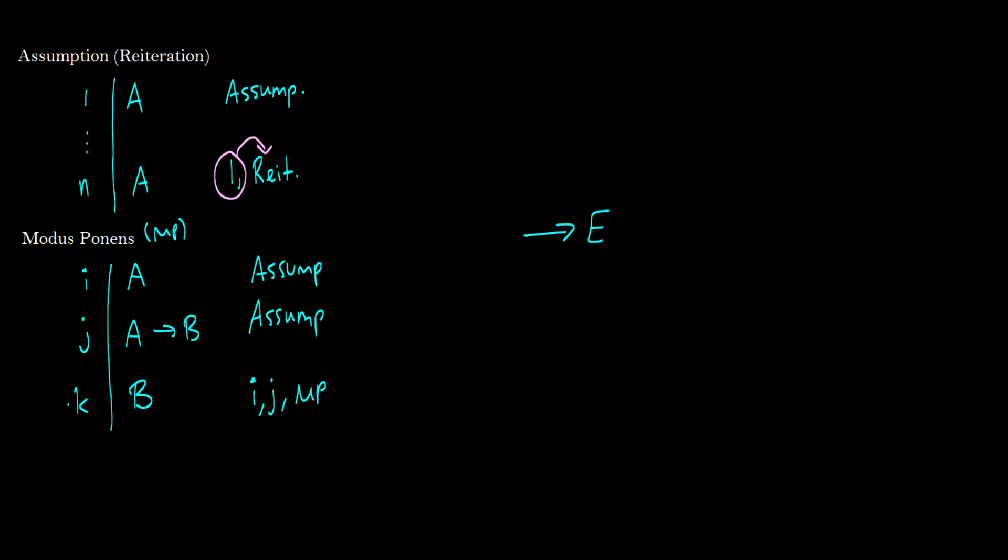This is also called conditional elimination sometimes, which you might see as that. This is a really weird term for this because it's modus ponens, and it is a commonly used term everywhere in philosophy. So I kind of can question books that use arrow elimination or they call it conditional elimination. It's kind of weird. It bothers me in ways that it shouldn't.